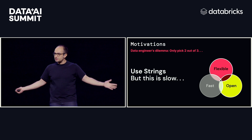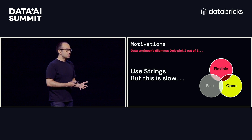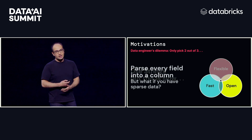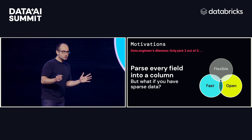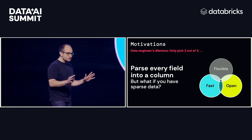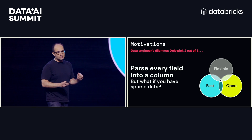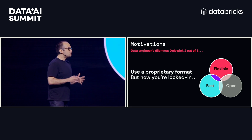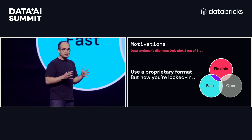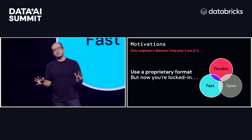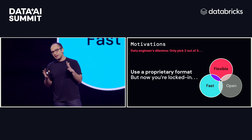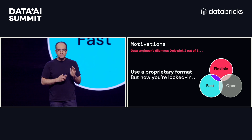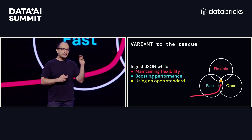For semi-structured data, one approach is to store everything as a string — that's open and gives you tons of flexibility, but parsing strings is slow. Why would you store a number as a string and have to reread it every time? There's also the option to pick fields out of your semi-structured data, make them concrete types, and get amazing performance — but if you have sparse data, you lose out on a lot of flexibility to modify the schema. Relational databases have had special enum or variant data types, but all of those have always been proprietary — if you wanted to use them to get a balance, you got locked in. That's why we're very excited with variant to get that sweet spot in the middle.